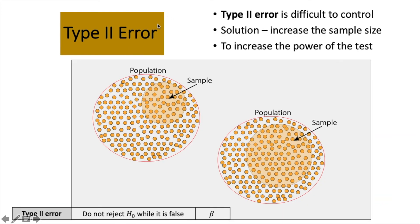Type 2 error, you do not reject the null where you are supposed to. So, Type 2 error is difficult to control.